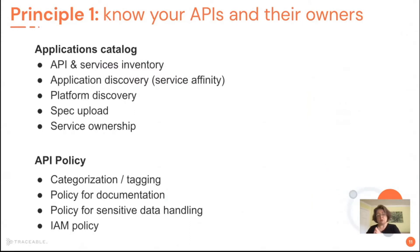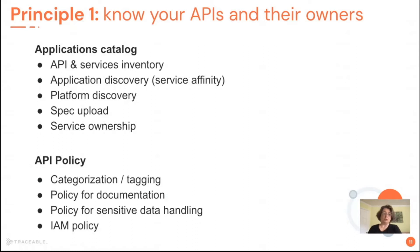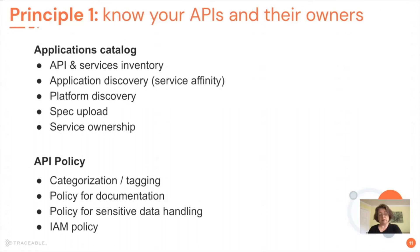Principle one: know your APIs and their owners. That is probably the first principle of cataloging — being able to list all your assets, and of course an API or microservice is nothing more than a software asset. Things you want to catalog include the APIs themselves, including the Swagger or OpenAPI definitions of each API and which service they belong to. Then the applications that the services belong to, and how services are grouped — for example, into a payment application or currency converting application. Knowing how services relate to each other for a business purpose helps to establish a monitoring policy.